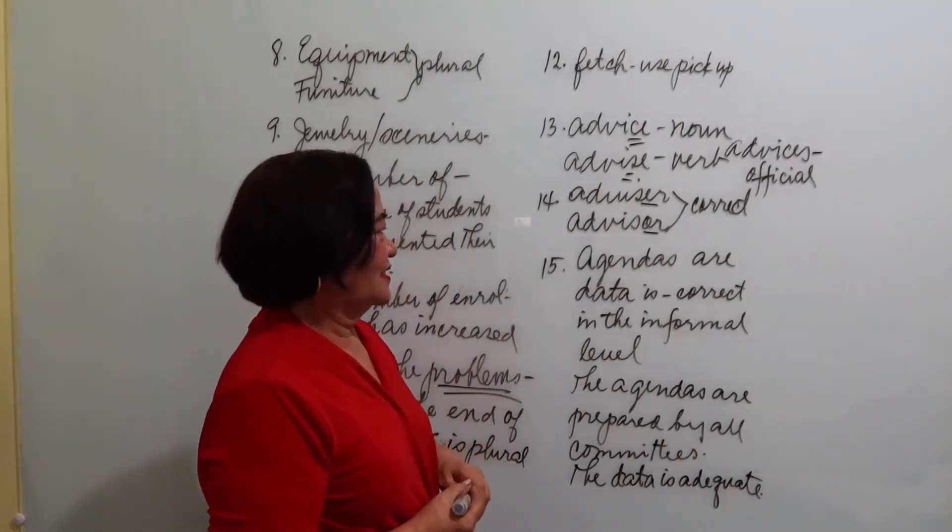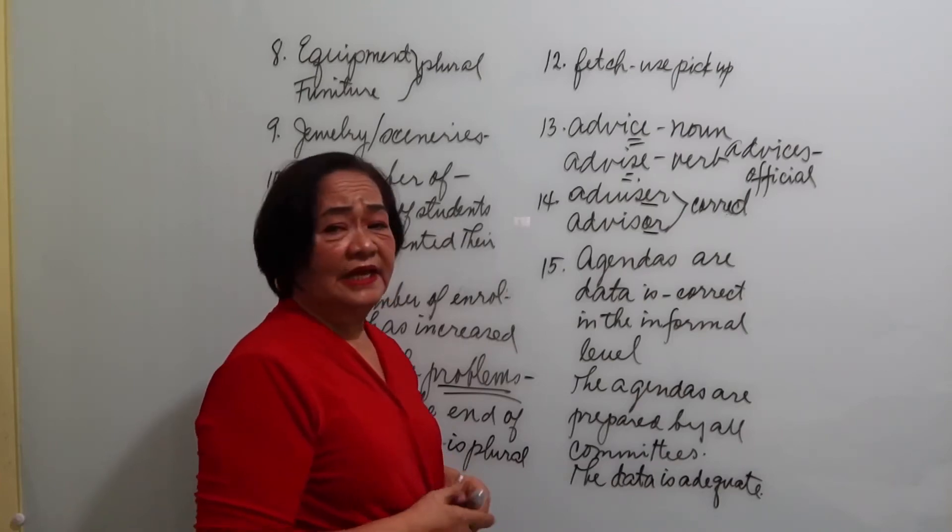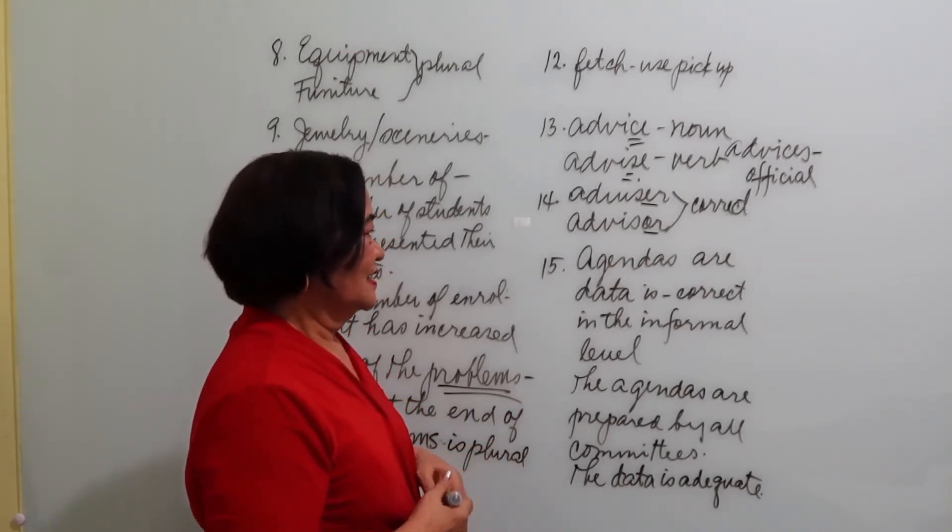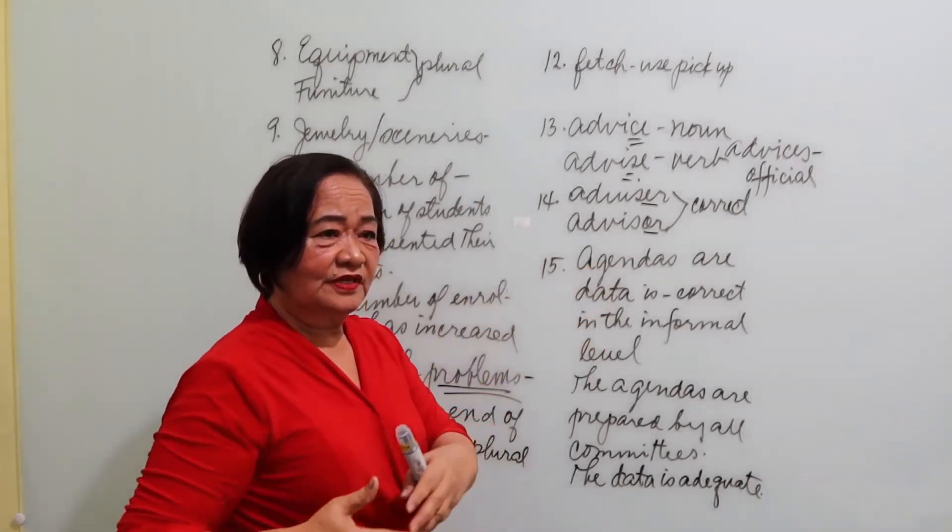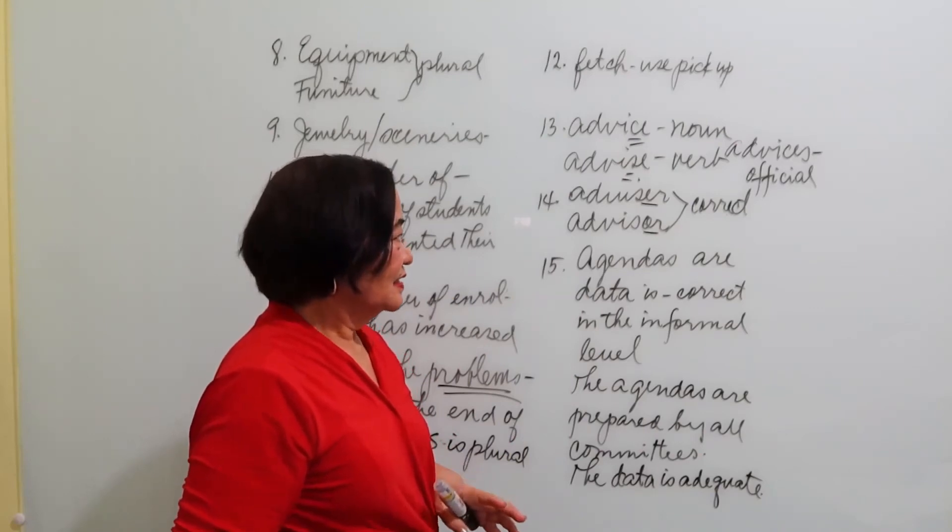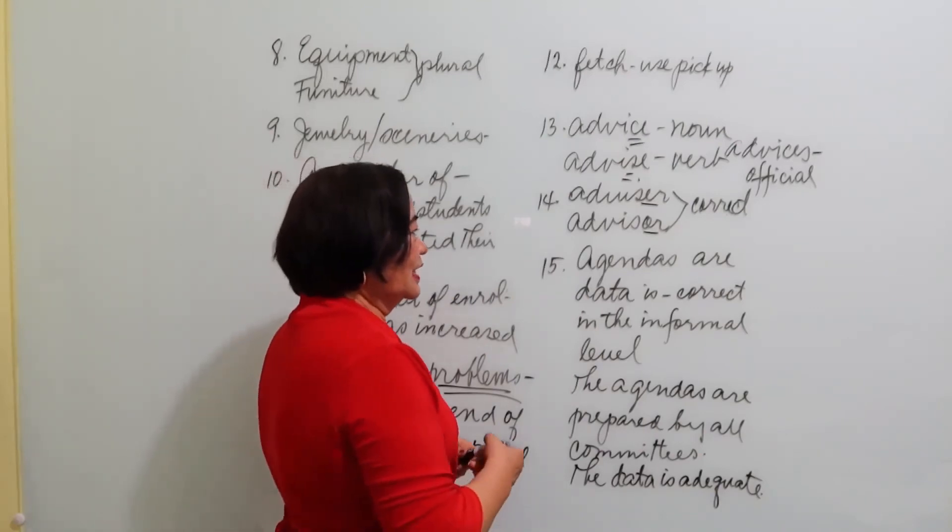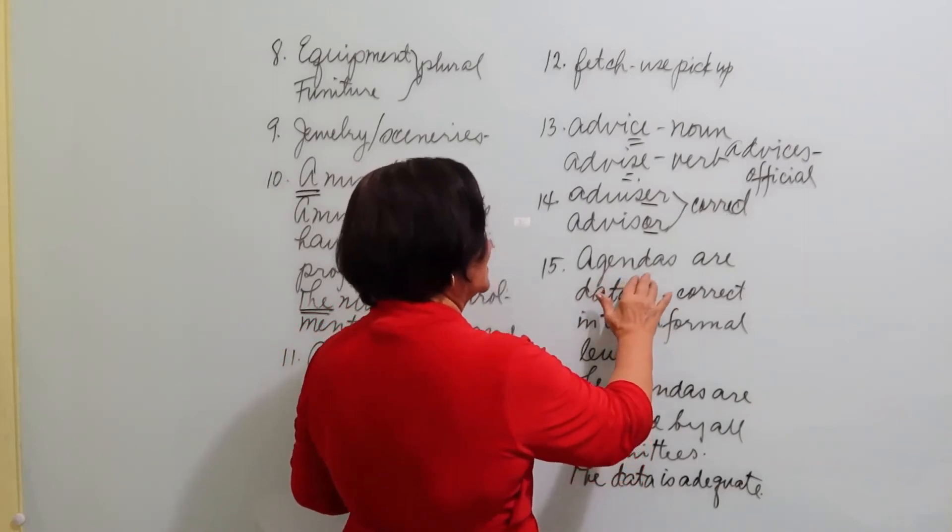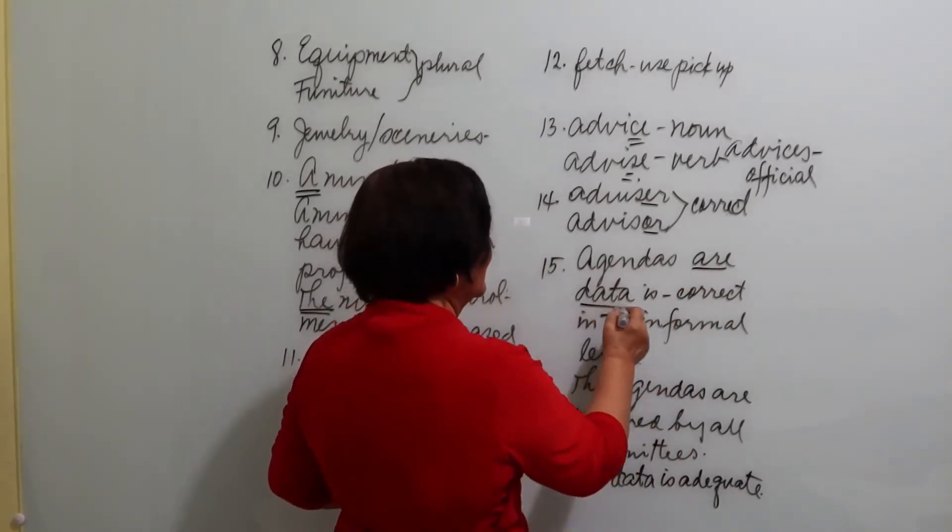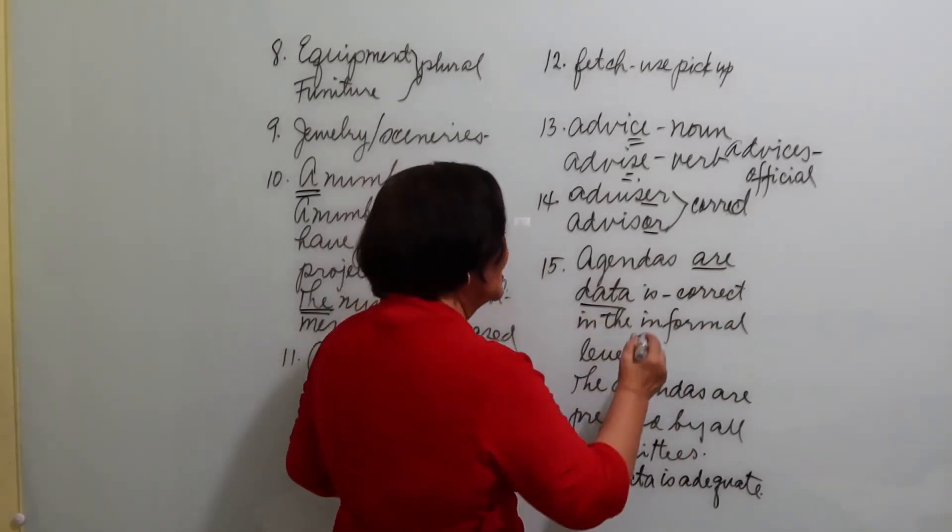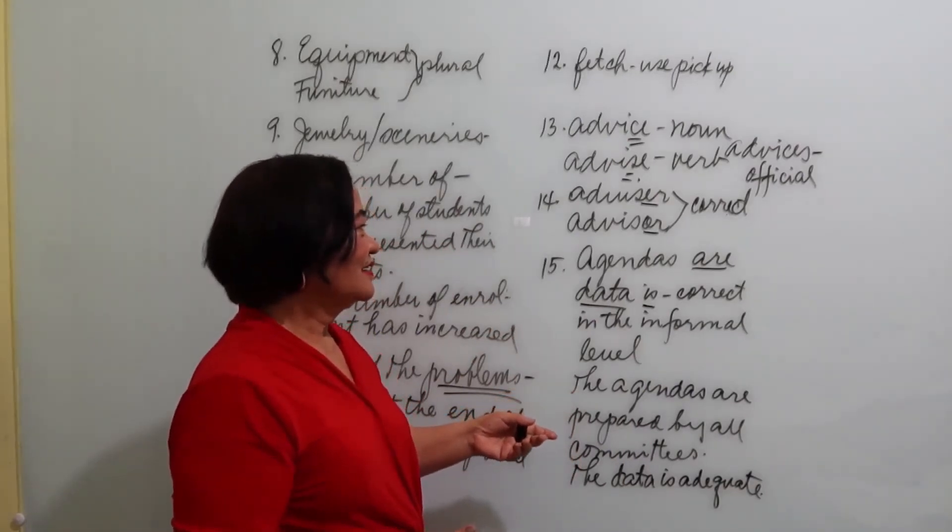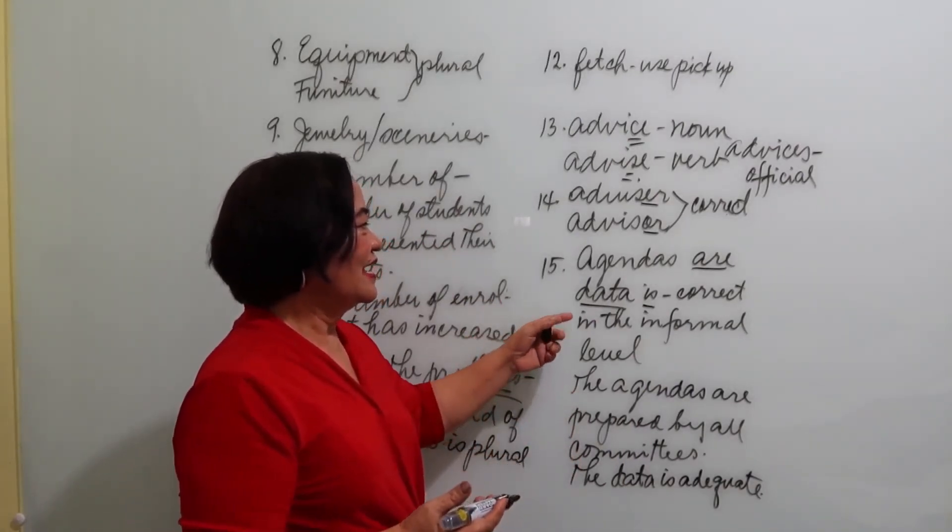Then we have agendas. Very often we say agenda. The agenda is prepared before the meeting. Agenda is the list of items, the list of issues to be settled in a meeting. But, we can also now use agendas, provided we use a plural verb. Data, which is the plural of datum, we use a singular verb. So, they are both correct. We may say datas. We may say agendas. And data.